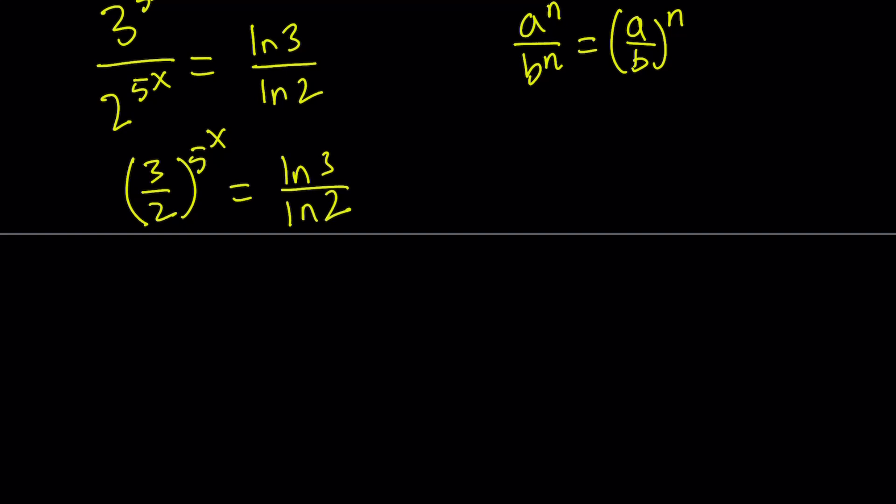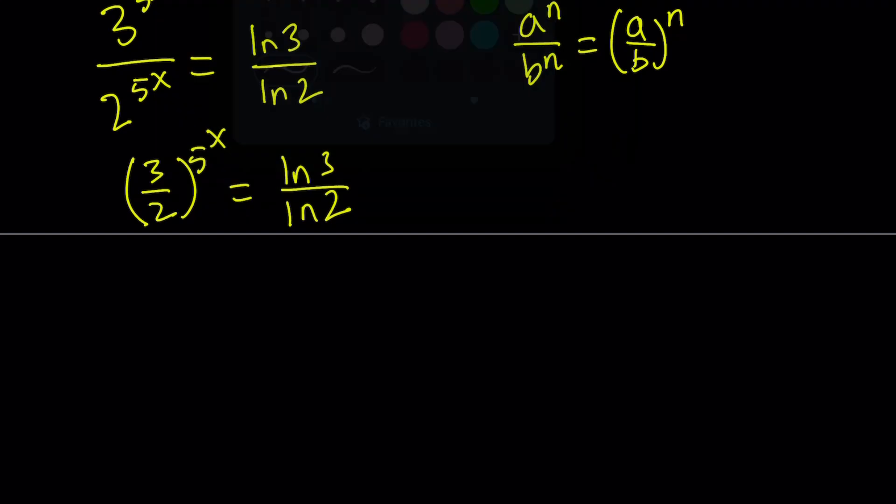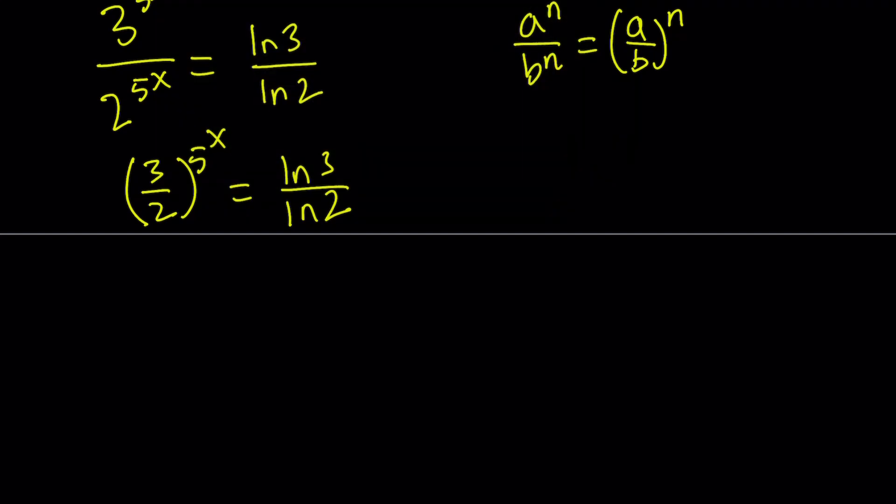So we still have an exponent, and that exponent has an exponent. So we need to do the same thing here. We need to move that thing to the front, but we have to ln both sides first. So let's go ahead and ln both sides, ln 3 halves to the power 5 to the power x equals ln ln 3 over ln 2.